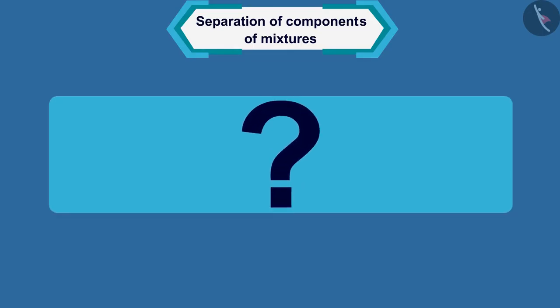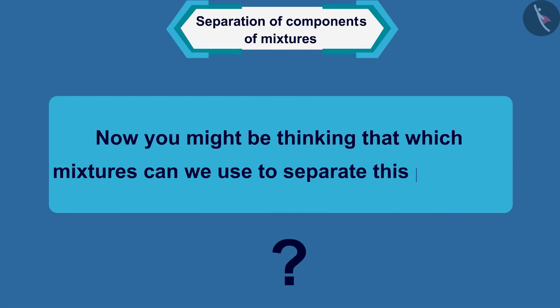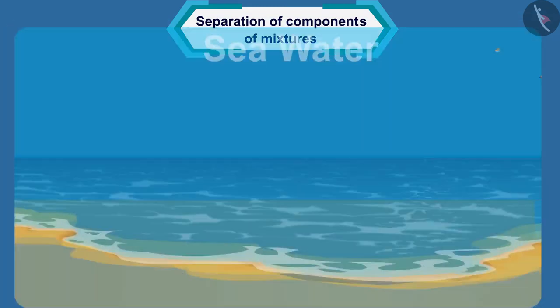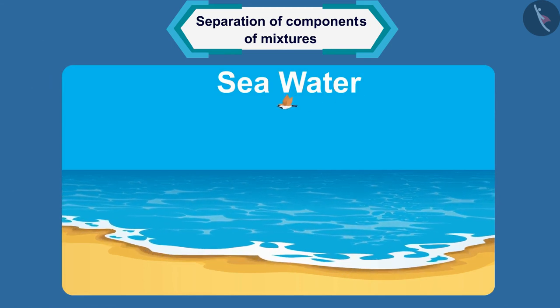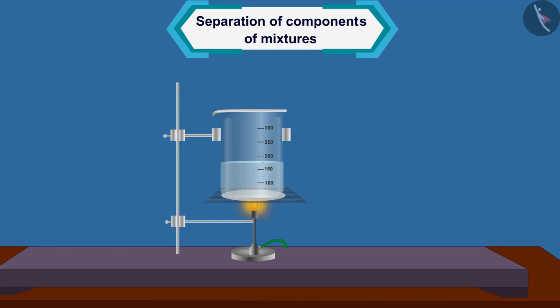Now, you might be thinking which mixtures can we use to separate by using this process. We can use crystallization to purify salt. For example, when receiving salt from sea water, it may contain many impurities. The crystallization method is used to remove these impurities.